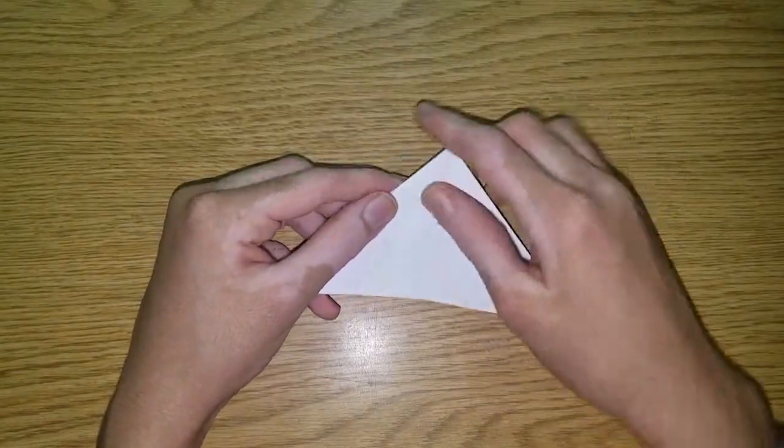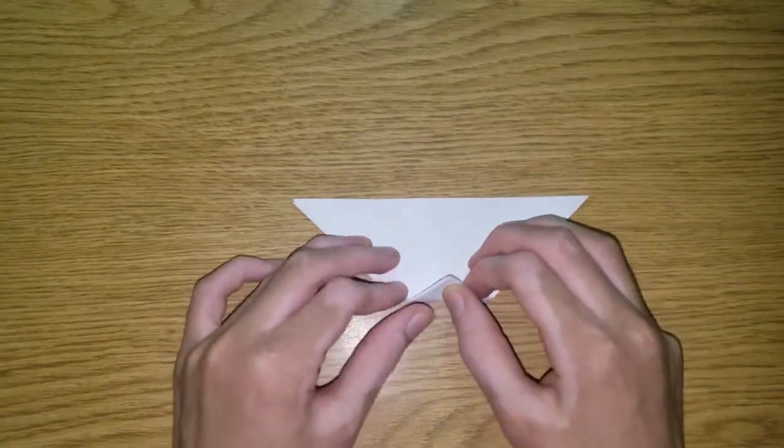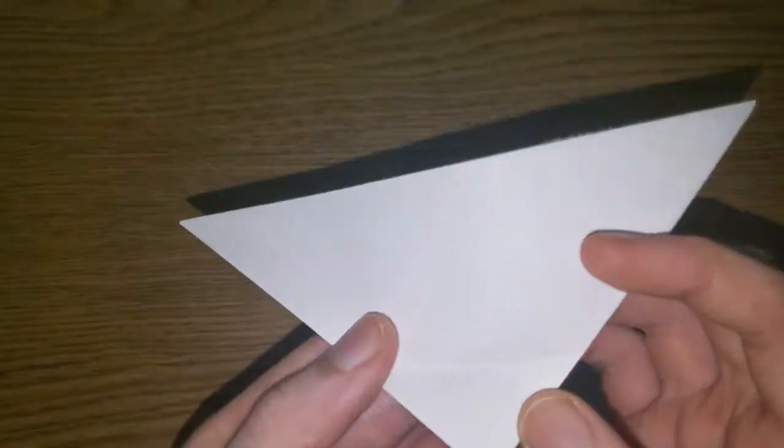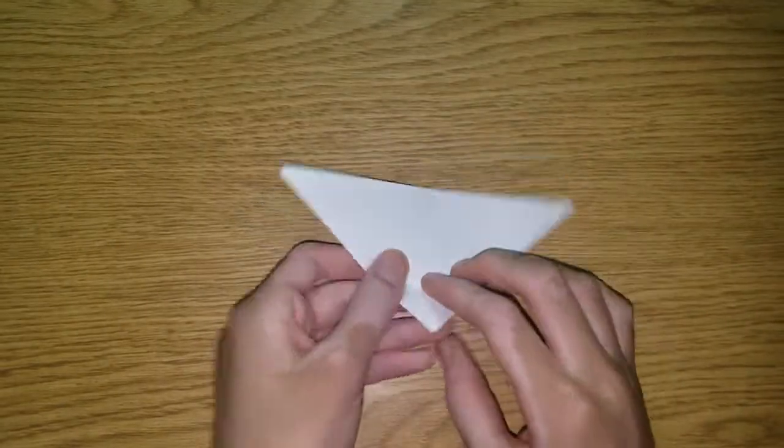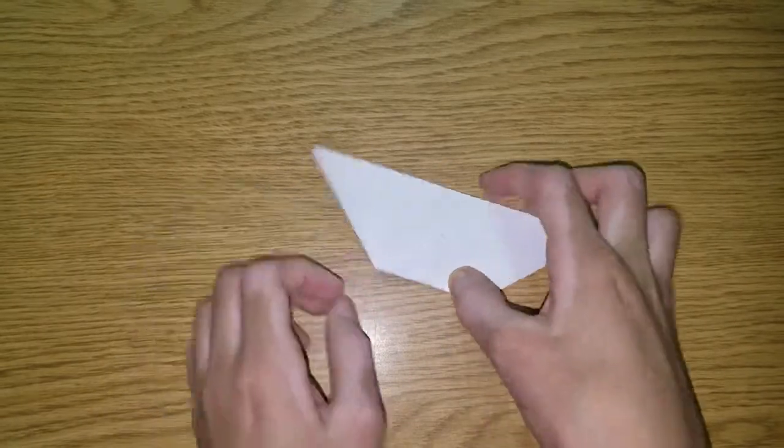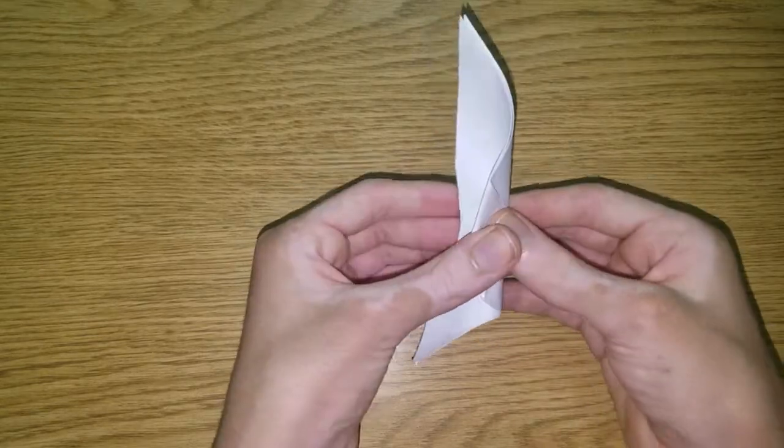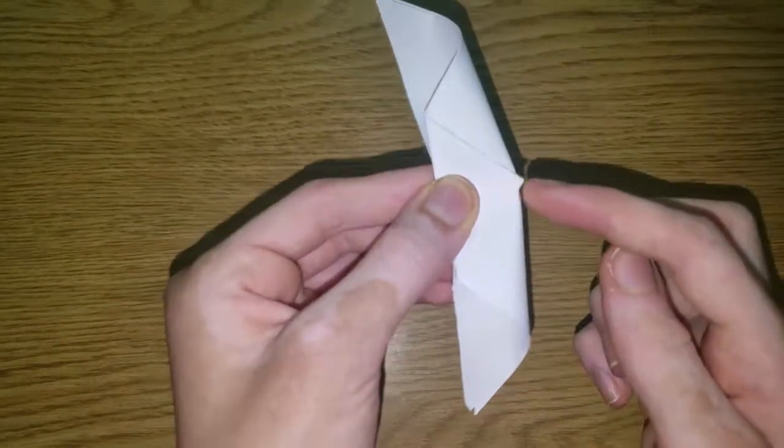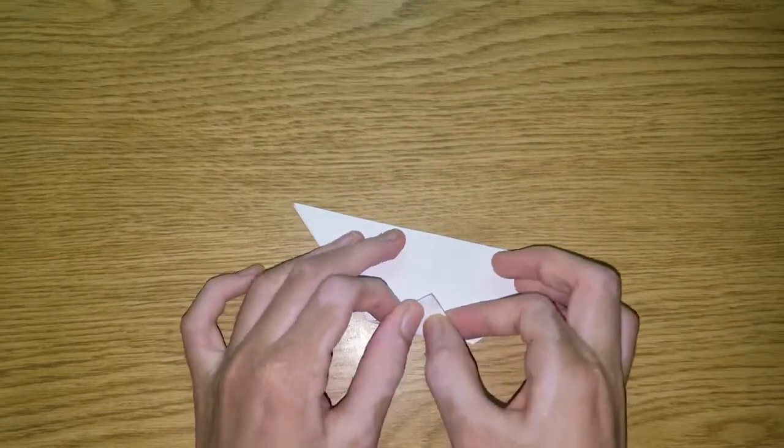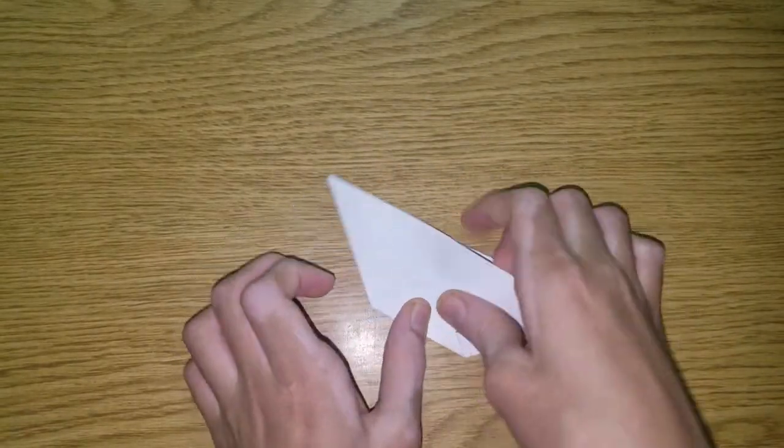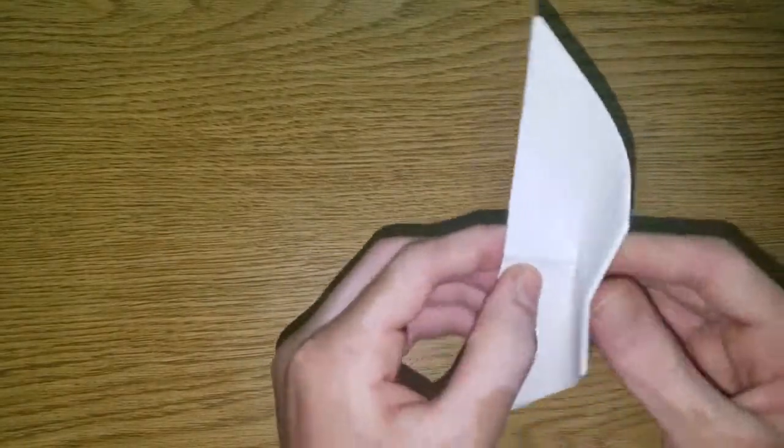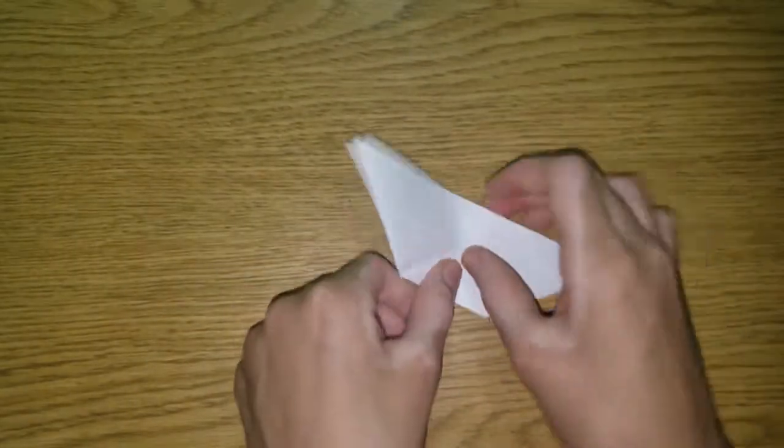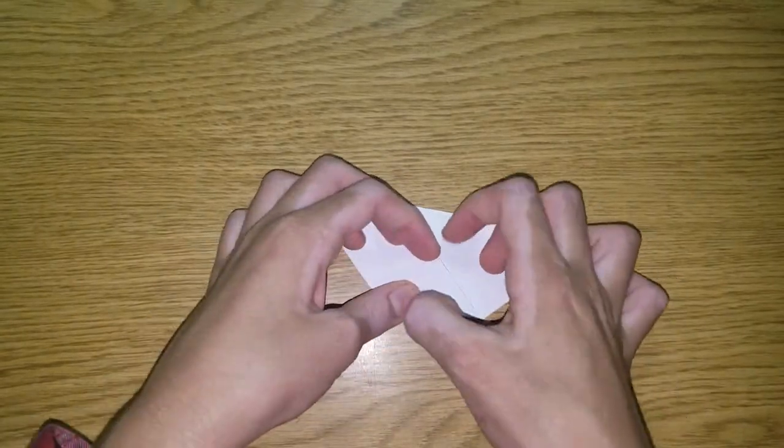Now you're going to divide it into thirds. So you can just estimate here. And make sure that this tip is touching that crease, the center crease there. And you can fold this back to make sure. You see there, it's not perfect, so I can make it a tiny bit less. It's still not perfect, but I think it's good enough. You don't need to fold it too exact.